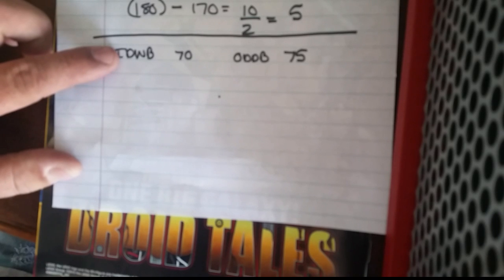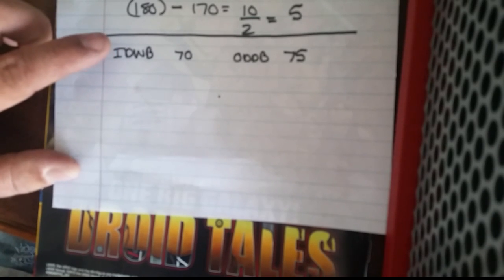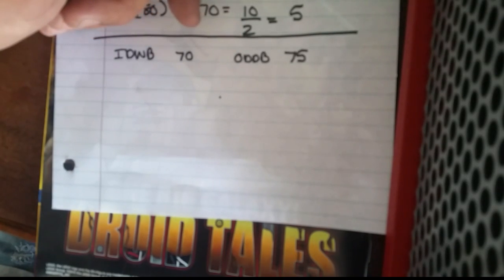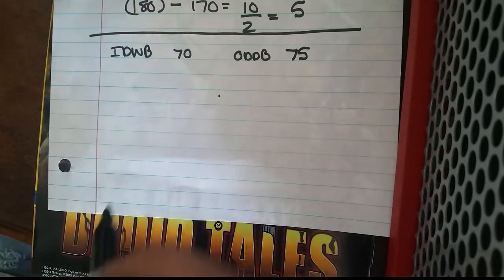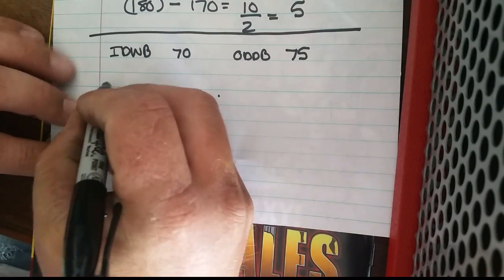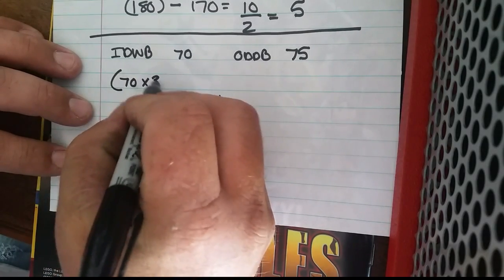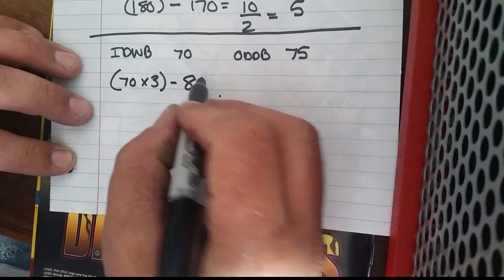Alright guys, let's compare when we have a much higher indoor wet bulb and a much lower outdoor dry bulb. That should give us a much higher target superheat. So let's see: we have 70 indoor wet bulb multiplied by 3, minus our constant which is 80, minus our outdoor dry bulb which is 75, over 2.